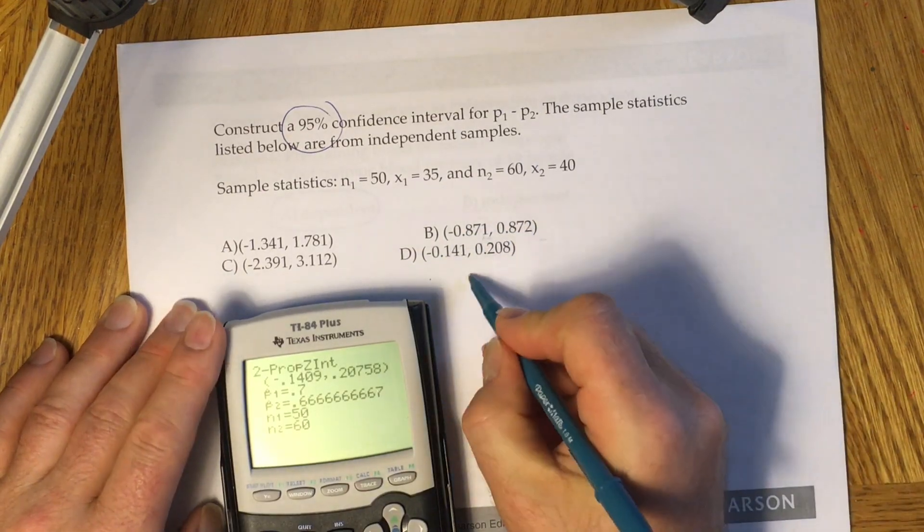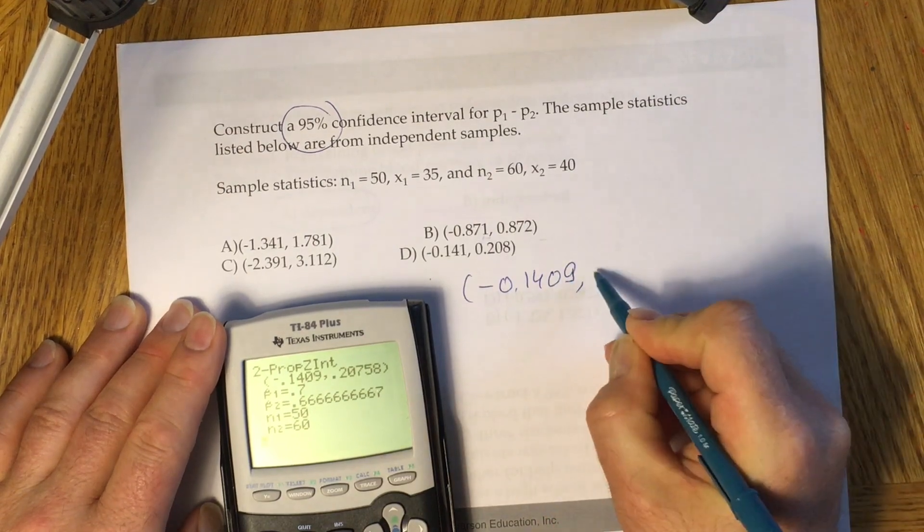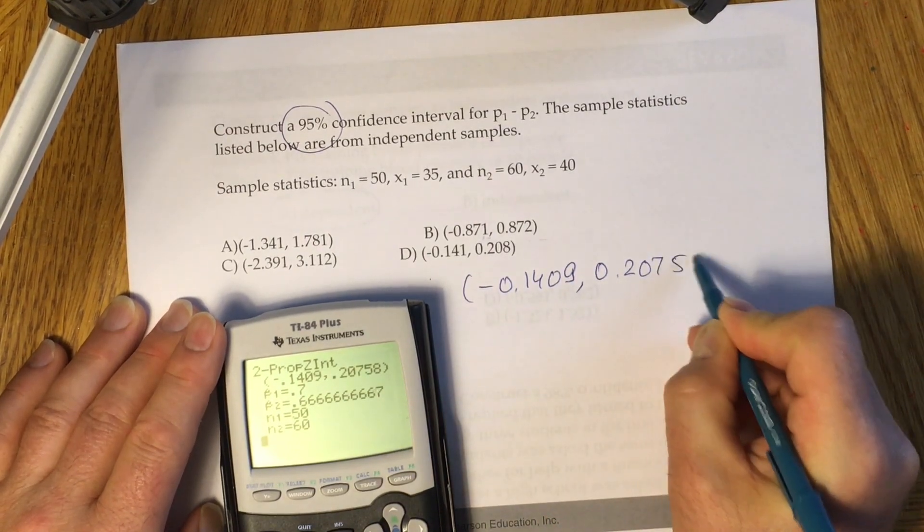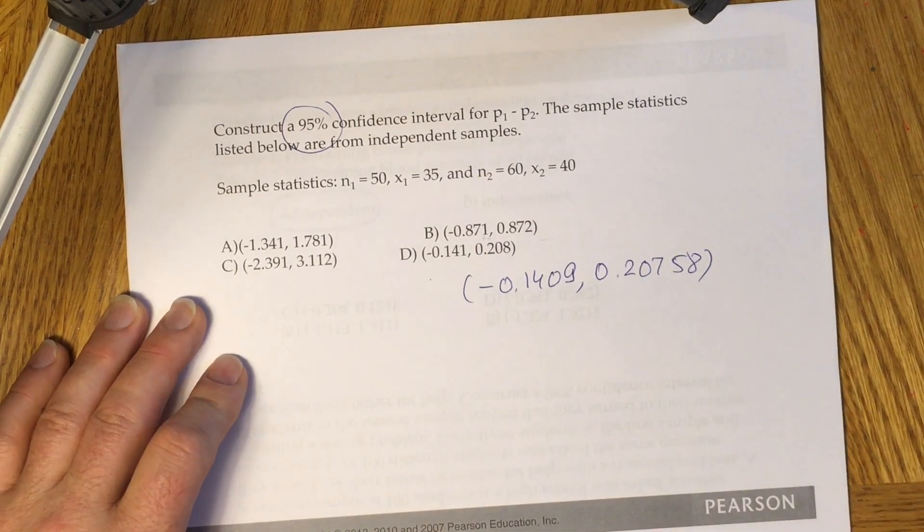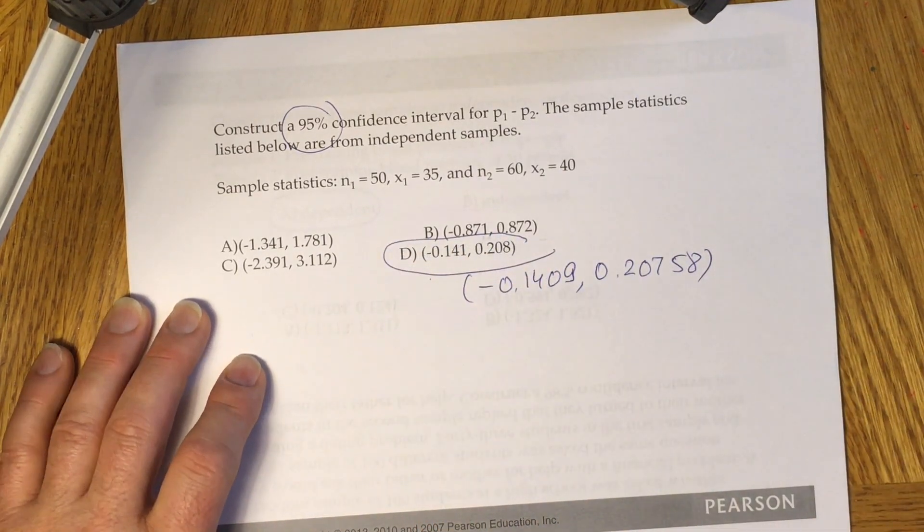The answer is (-0.1409, 0.20758). If you compare that with the given options, you'll see that this is clearly option D. We've solved this problem.